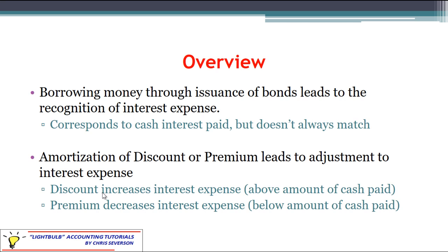However, anytime we have a discount or premium that we need to amortize, this will lead to an adjustment to interest expense. Specifically, if the bond was issued at a discount, then over time as we amortize that discount we're going to see an increase in interest expense above and beyond the amount of cash interest that's actually paid for that period.